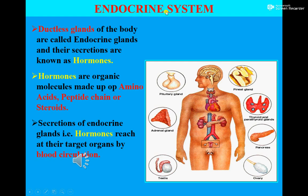What is the Endocrine System? The endocrine system can be defined as a system that consists of ductless glands of the body, and their secretions are known as hormones.